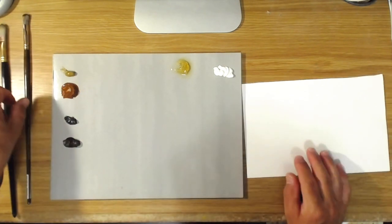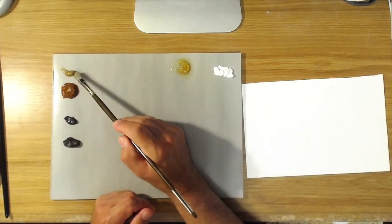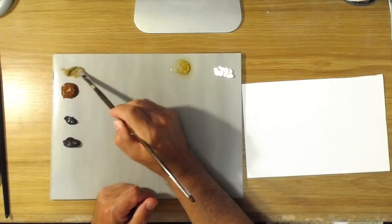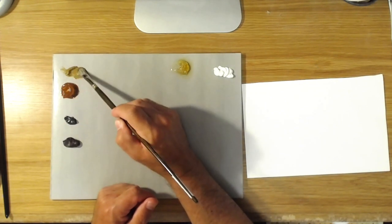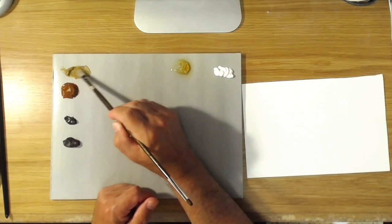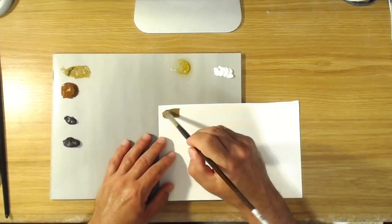For example, raw sienna, which is the first color I have here - I just have a little titanium white over here, I'm going to show you what they look like. Raw sienna is very similar in tone to yellow ochre actually, but as you can see it's very light and kind of yellowish but less yellow than yellow ochre.